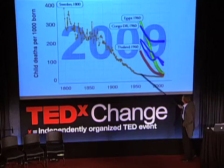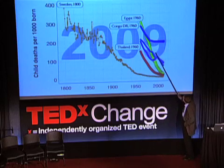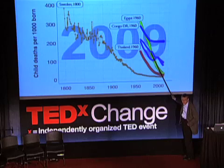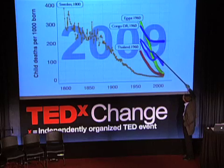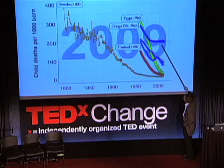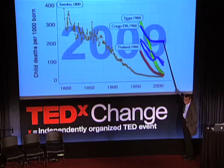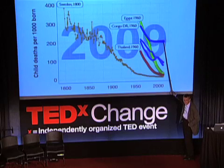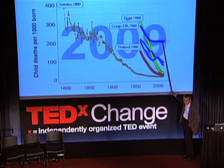Millennium development goal rates for child mortality are fully possible. The good thing is that Ghana today is going at the same rate as Egypt did at its fastest. Kenya is now speeding up. But we have a severe problem in countries which are at a standstill.